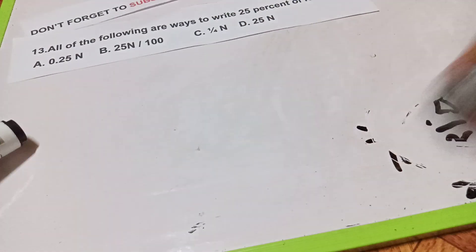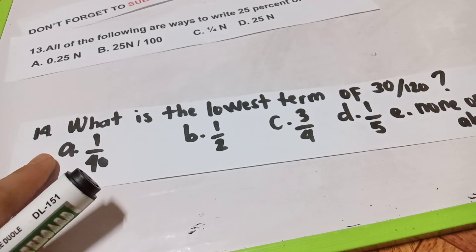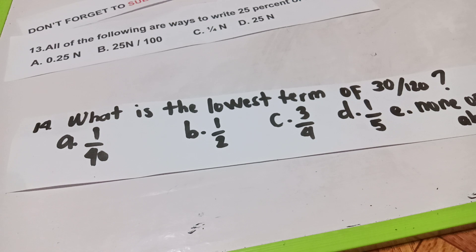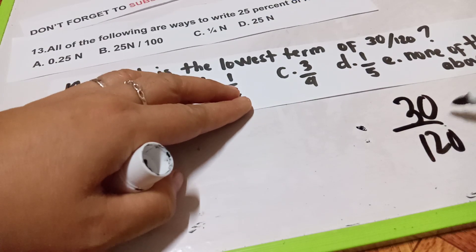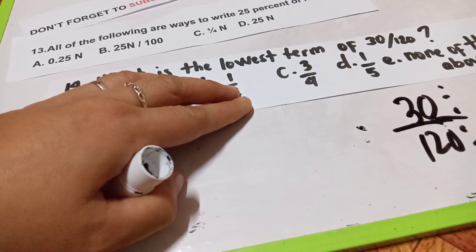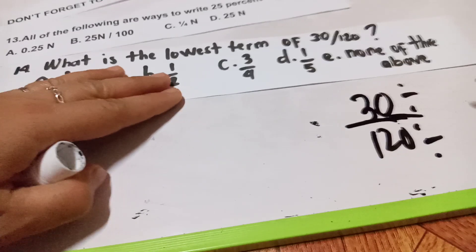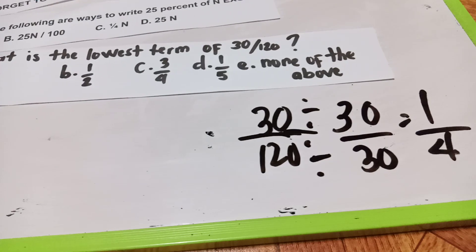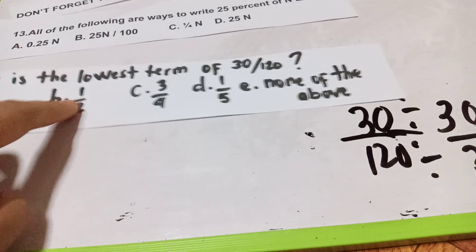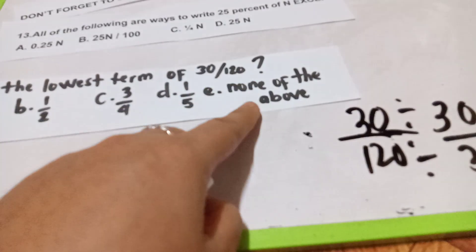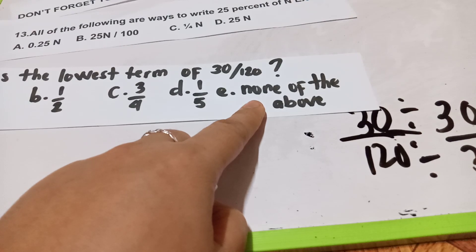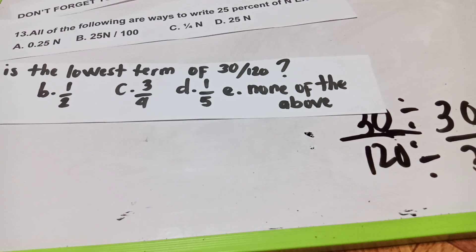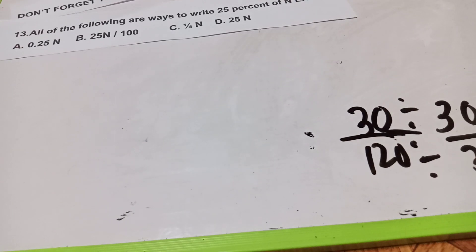Let's have question number 14: what is the lowest term of 30 over 120? We know that 30 over 120 is divisible by 30. So 30 divided by 30 is 1 over 4. The answer choices include 1/4, 1/2, 3/4, 1/5, or none of the above. The answer is letter E — none of the above.